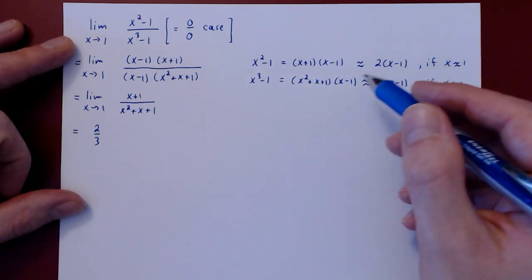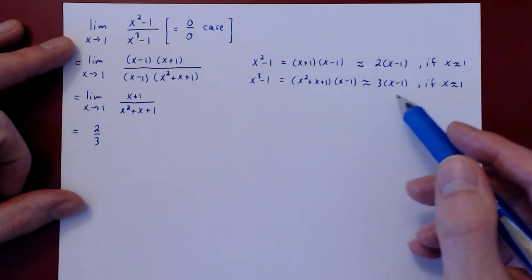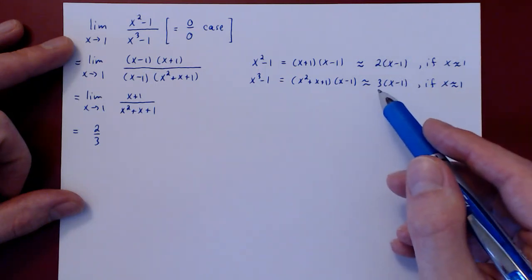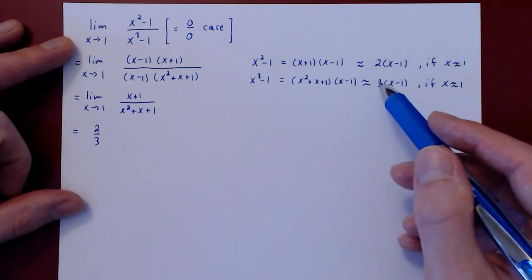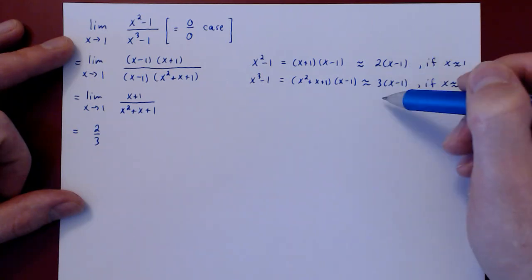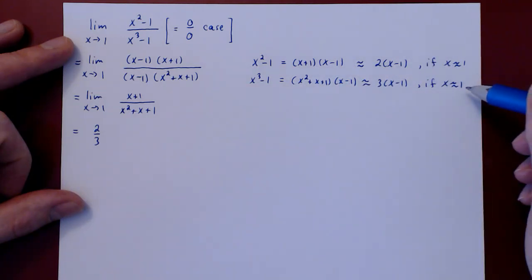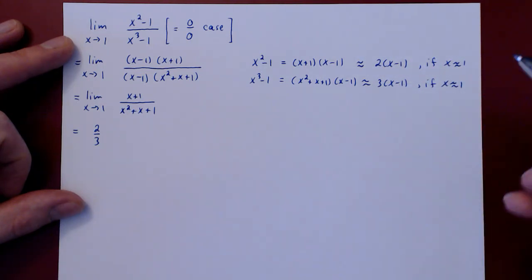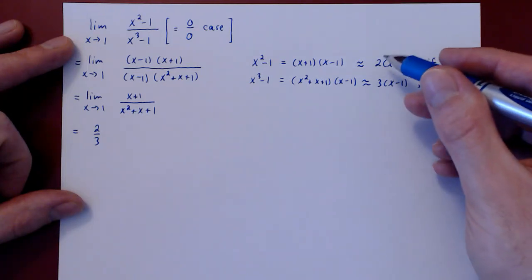What we have now are approximations simpler than the original functions. Looking at the form of both approximations, these are lines: 2 times x minus 1 is a line of slope 2, and 3 times x minus 1 is a line of slope 3 — giving us 2 over 3. Near a given value of x, the kinds of lines that give very good approximations to functions are tangent lines.